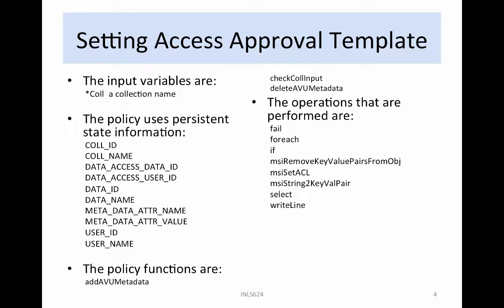The operations that are performed include fail and stop execution, for each loop over result set, if for a conditional test, MSI remove key value pairs from object to remove AVUs from a file, MSI set ACL to set access controls on the file, MSI string to key value pair to convert a string to a key value pair, select to create a query, and write line to output a result line.